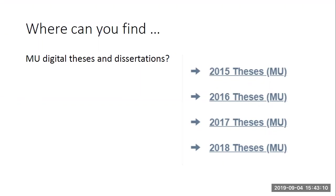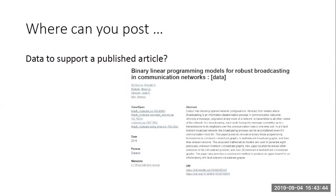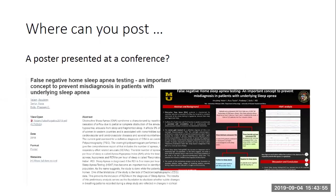I'm Felicity Dykes in Digital Services. Let me start by asking: where can you find MU digital theses and dissertations? How about publications of the University of Missouri Extension — for example, publications on cash rental rates, alfalfa, artificial insemination in swine, and challenges and choices for healthy living? Where can you as a student or researcher post data to support a published article, or post a poster presentation so you can link to it in the future? The answer is MoSpace.